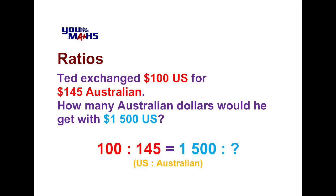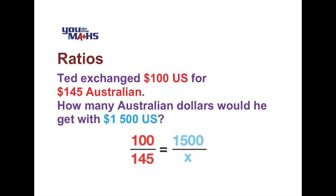That ratio is shown there in red. In light blue we'll put the other ratio, which involves the amount of Australian dollars we don't know. So that ratio is 1,500 to an unknown amount, shown with a question mark in light blue. We'll take those same ratios and express them as fractions: 100 over 145 for our first ratio, and 1,500 over the unknown amount, which we'll call X, for our second ratio.